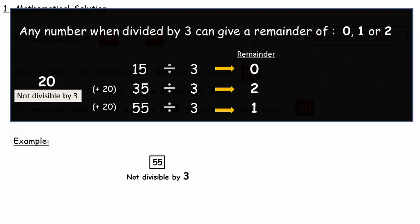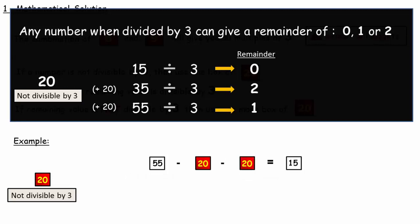So in the example of 55 nuggets, the same logic is applied in reverse. 20 is not divisible by 3. And we are repeatedly subtracting it from 55 unless we get a remainder of 0. And it takes a maximum of 2 subtractions to get the remainder as 0.